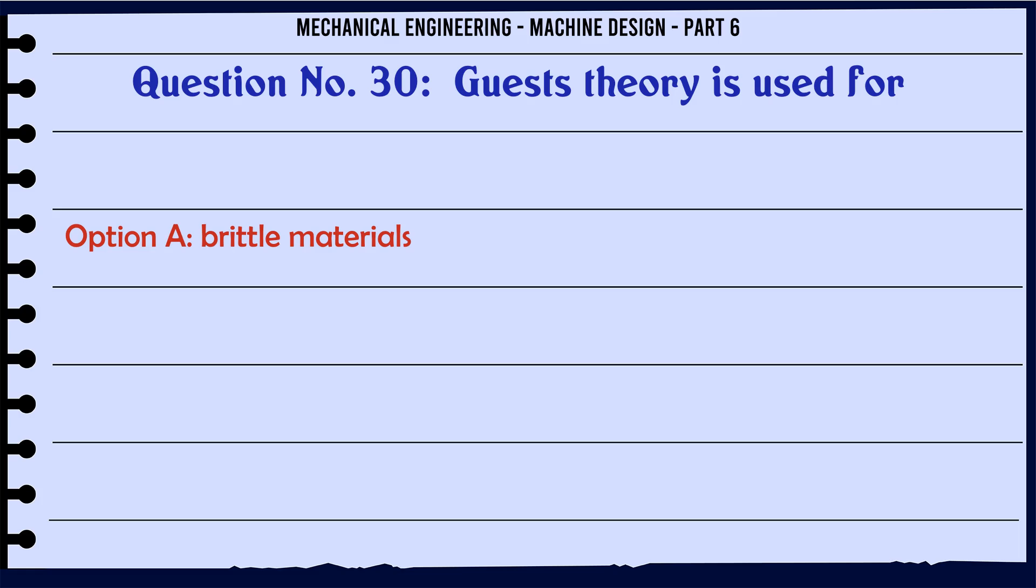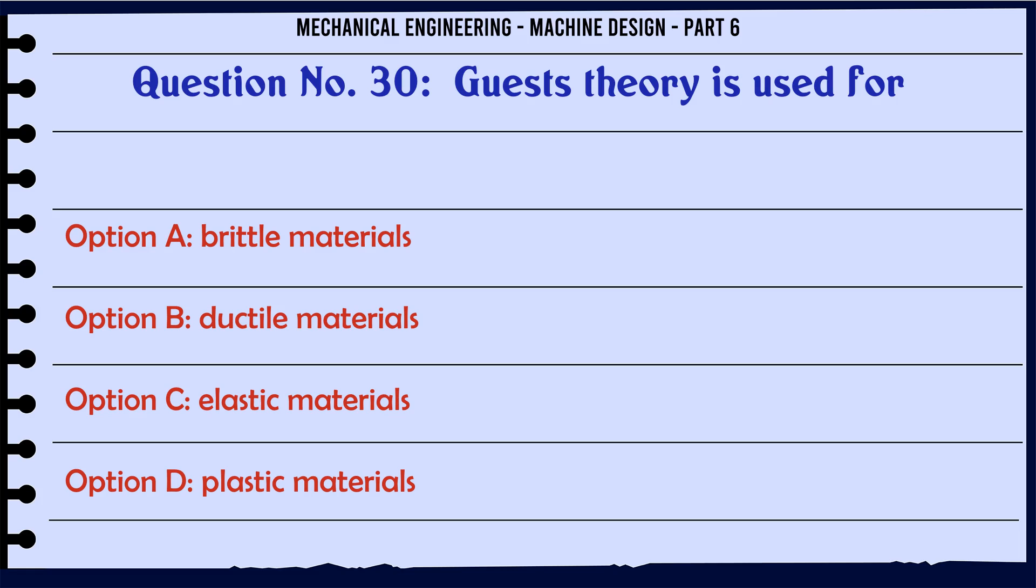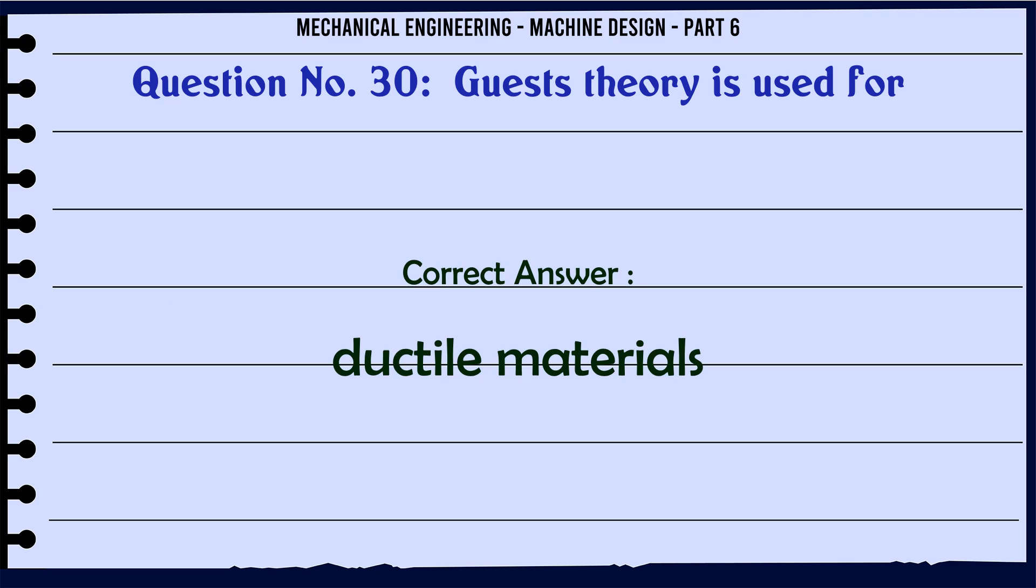Guest's theory is used for: A) brittle materials, B) ductile materials, C) elastic materials, D) plastic materials. The correct answer is ductile materials.